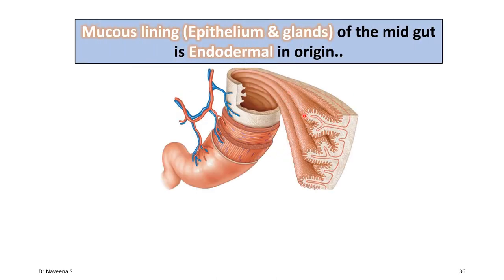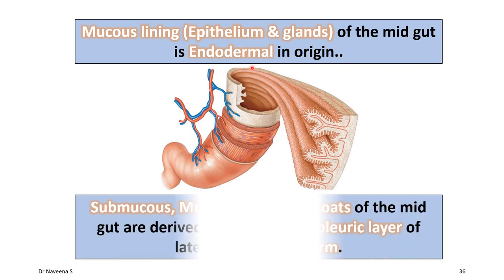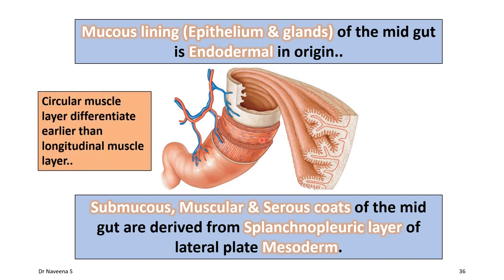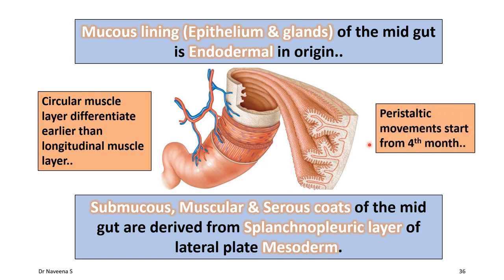Now let's move on to histogenesis of the midgut. Histologically, only the mucous lining epithelium and glands are derived from endoderm, whereas the rest of the layers of the midgut are derived from the splanchnopleuric layer of the lateral plate mesoderm. A point to note is that smooth muscles around the midgut are arranged in two layers — inner circular and outer longitudinal. The inner circular muscle layer differentiates earlier than the outer longitudinal layer, so that peristaltic movements start from the fourth month.